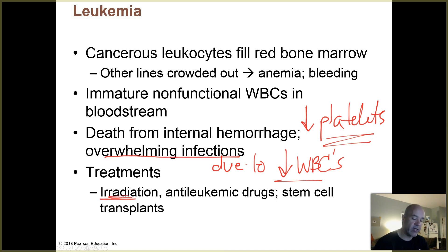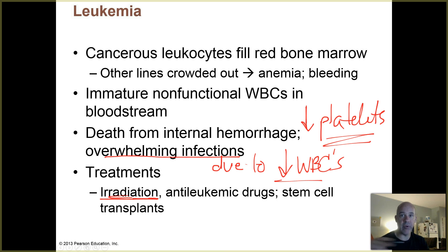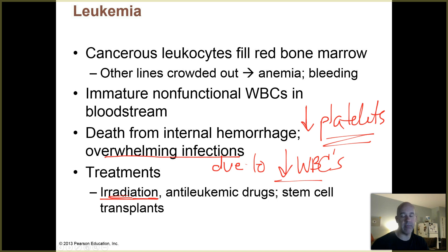Treatments for leukemia include radiation, which damages cells that are dividing very quickly by damaging DNA — the genetic recipe books that tell cells how to function. Cancer cells are particularly susceptible because they divide rapidly and must constantly copy their DNA. However, radiation also damages other quickly dividing cell types in your body, like your red bone marrow.